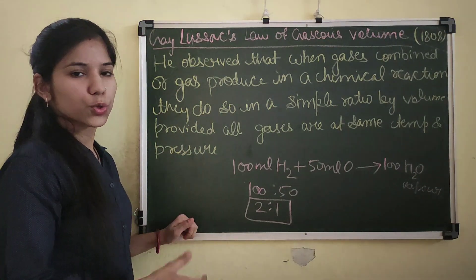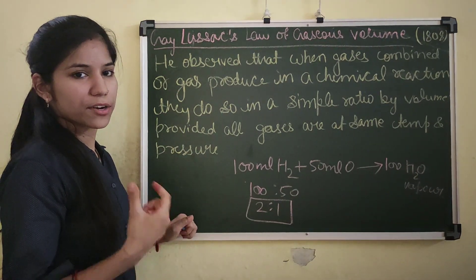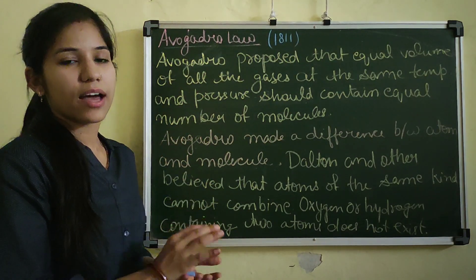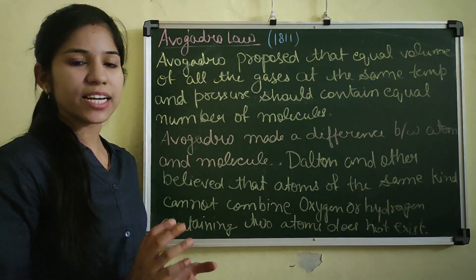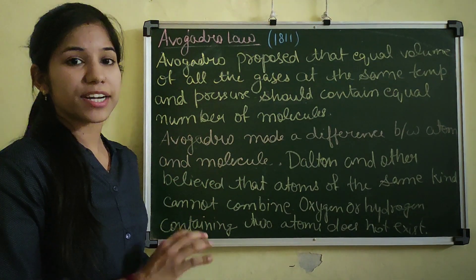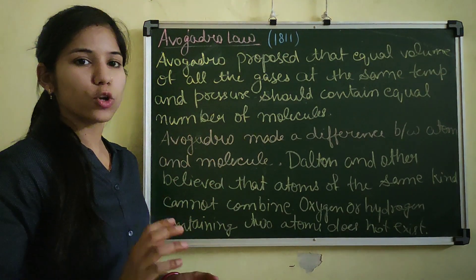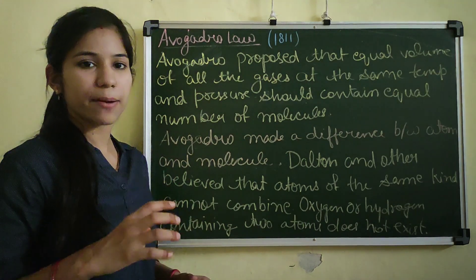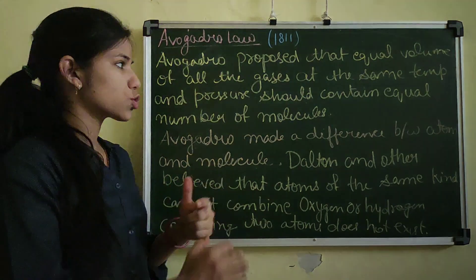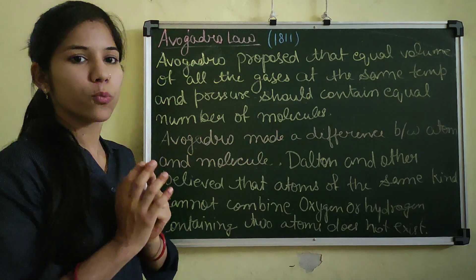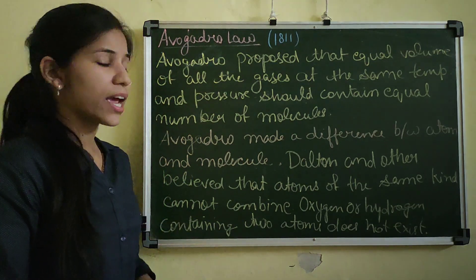Now we move on to Avogadro's law. In 1811, Avogadro proposed that equal volumes of all gases at the same temperature and pressure contain an equal number of molecules. Avogadro also made a distinction between atoms and molecules. For example, 2 volumes of hydrogen react with 1 volume of oxygen to form 2 volumes of water, without leaving any unreactive oxygen.